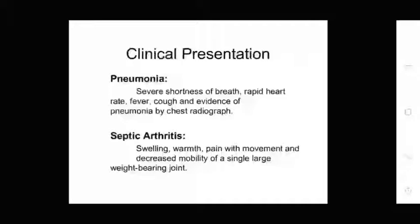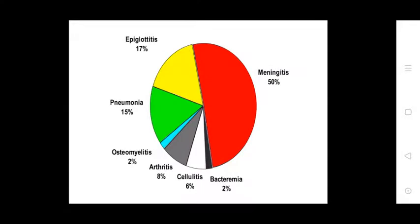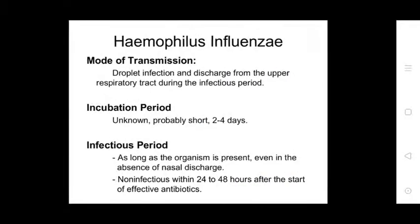Septic arthritis presents with swelling, warmth, pain on movement, and decreased mobility in single large weight-bearing joints. Distribution of invasive Hib disease: epiglottitis 17%, pneumonia 15%, osteomyelitis 2%, arthritis 8%, cellulitis 6%, bacteremia 2%, and meningitis 50%.